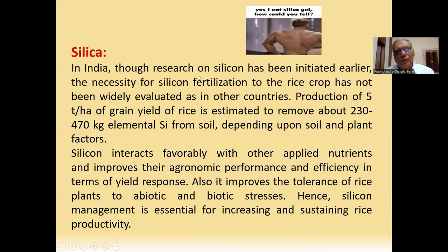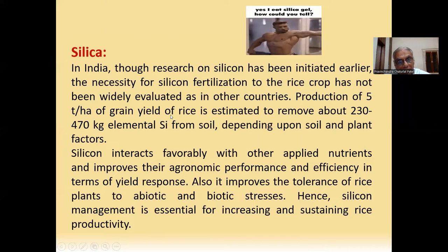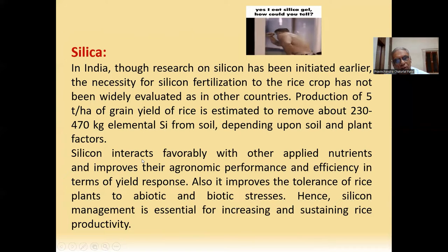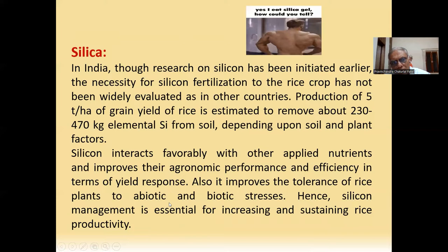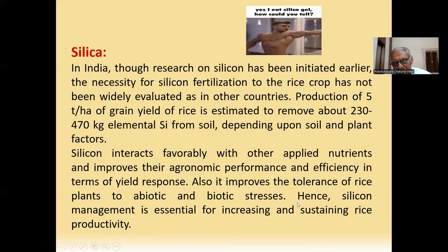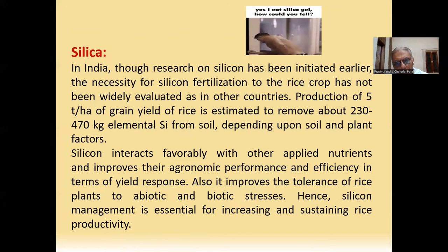The second micronutrient is silicon. In India, research on silicon has been initiated earlier, but silicon fertilization for rice crop has not been widely evaluated. As in other countries, production of 5 ton per hectare grain yield of rice is estimated to use about 230 to 470 kg elemental silicon from the soil. Depending upon soil and plant factors, silicon interacts favorably with other applied nutrients and improves their agronomic performance and efficiency in terms of field response. It also improves the tolerance of rice plants to abiotic and biotic stresses. Hence, silicon management is essential for increasing and sustaining rice productivity. Rice and sugarcane crops are more responsive to silicon.